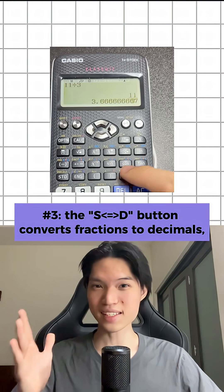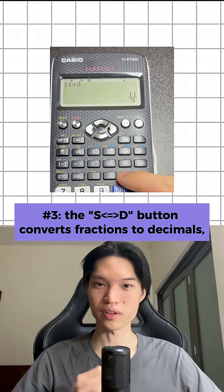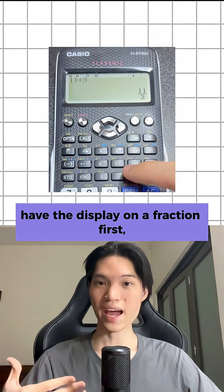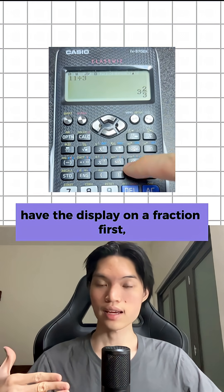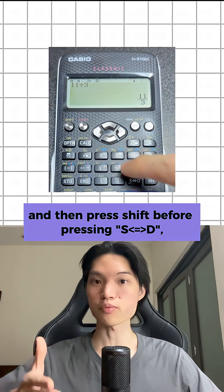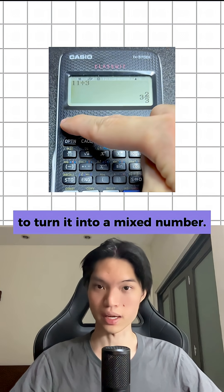Number three, the SD button converts fractions to decimals and vice versa. To get mixed numbers, have the display on a fraction first and then press shift before pressing SD to turn it into a mixed number.